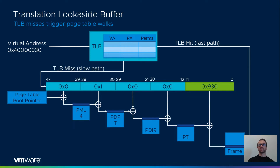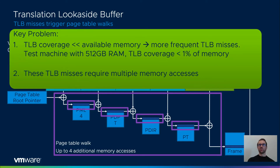Subsequent memory accesses hit in the TLB, which then directly returns the corresponding cached physical address. In the case of a TLB miss, however, the hardware page table walker uses the in-memory page table to perform the virtual to physical address translation. The key problem is that on the one hand we have an increasing amount of DRAM capacity per processor, while on the other hand the size of the TLB is stagnating. On our test machine, the TLB coverage is less than 1% of total RAM. Adding more DRAM further reduces TLB coverage, leading to more frequent TLB misses. On the x86 architecture, a TLB miss may require up to four additional memory accesses, and all of these may go to remote NUMA nodes, so the page table walker experiences NUMA effects while walking the page table.